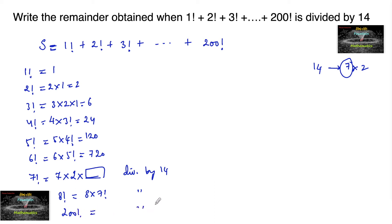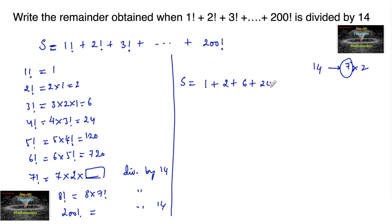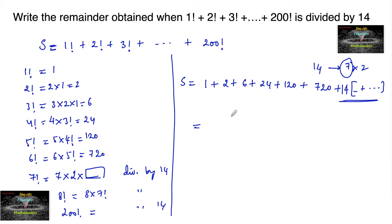So we can write S as 1 plus 2 plus 6 plus 24 plus 120 plus 720, and from 7 factorial onwards each term is 14 into some number. So S equals 1 plus 2 plus 6 plus 24 plus 120 plus 720 plus 14 times x.